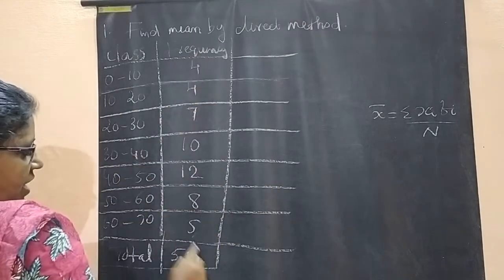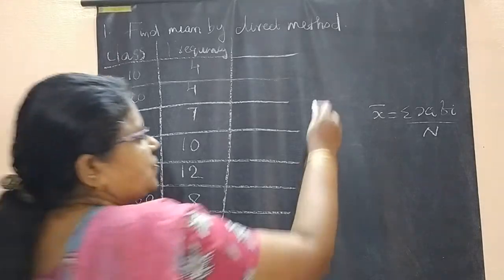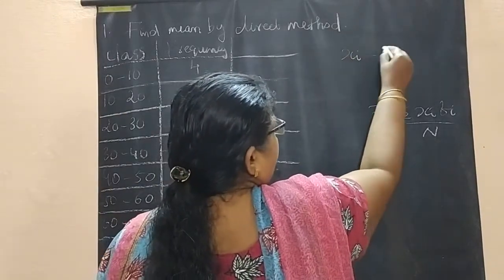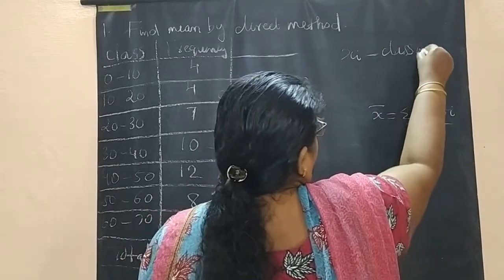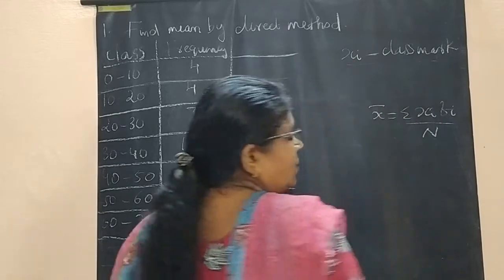These are our fi's, but what is our xi? This xi means class mark. What is xi? Xi means class mark.